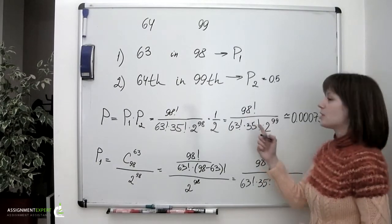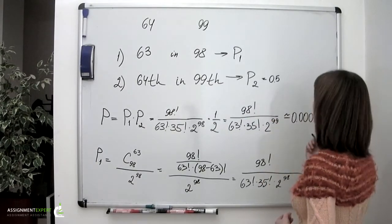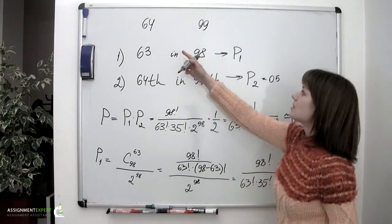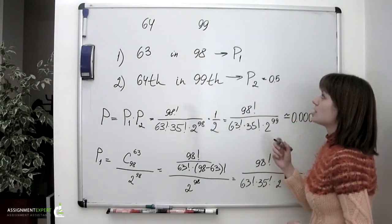As you can see the probability of this event of having 64 heads in 99 tosses is pretty low.